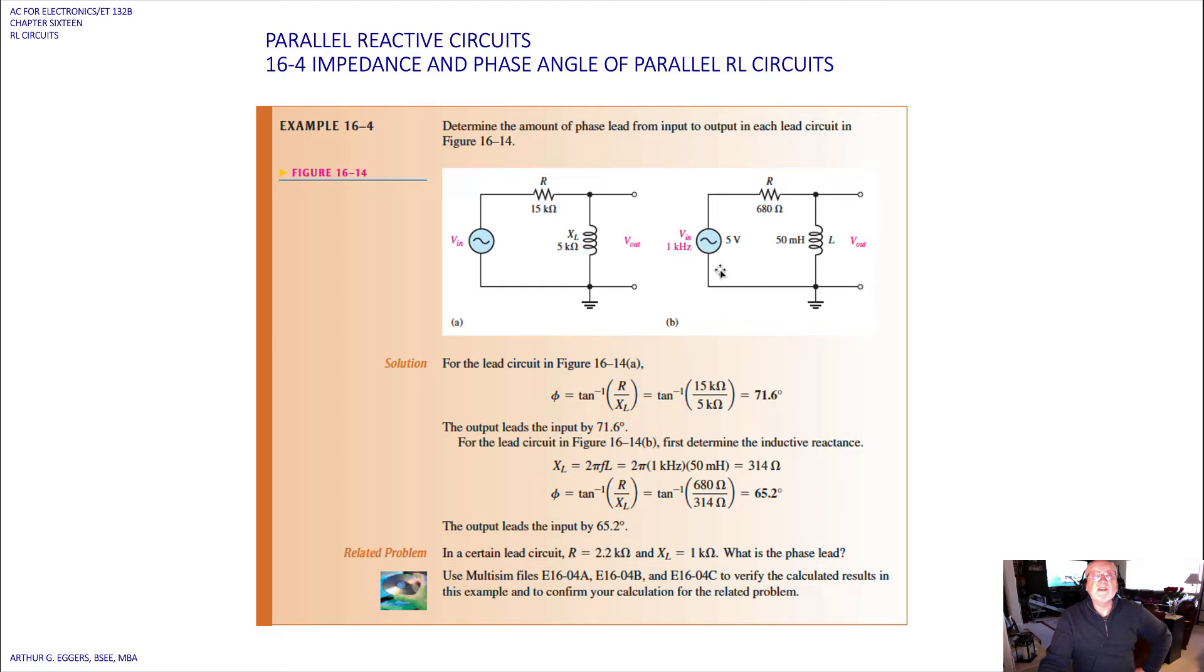So let's take a look at an example. In this example, they want us to determine the amount of phase lead from the input to the output in each lead circuit. So for the lead circuit in A, we've got the 15k ohm resistor, we've got a 5k ohm inductor, we've already got the reactance calculated.